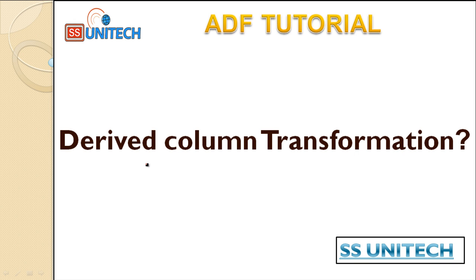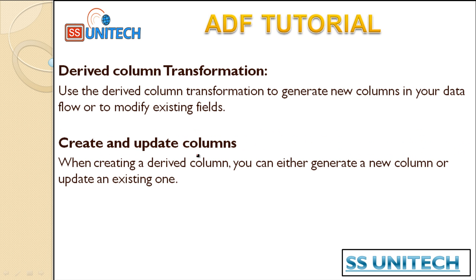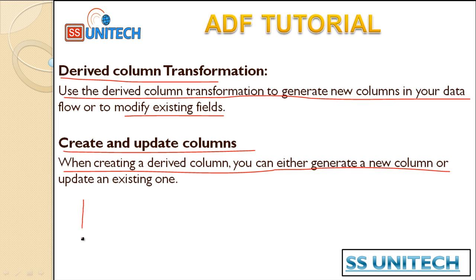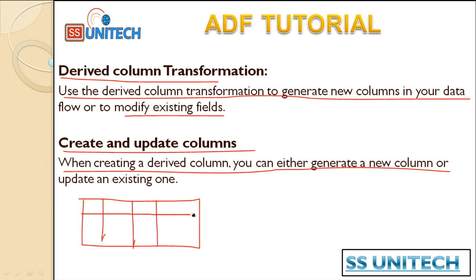Welcome to SSUnitech Social Design. Today we are going to see the derived column transformation. Derived column transformation is used to generate new columns in your data flow or to modify existing fields. When creating a derived column, you can either generate a new column or update an existing column. If you don't want to load data directly into the destination but want to do certain modifications on existing columns or create a new column with additional data, you can use the derived column transformation.